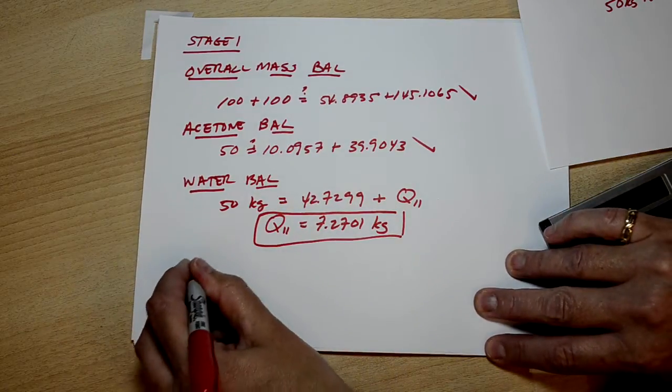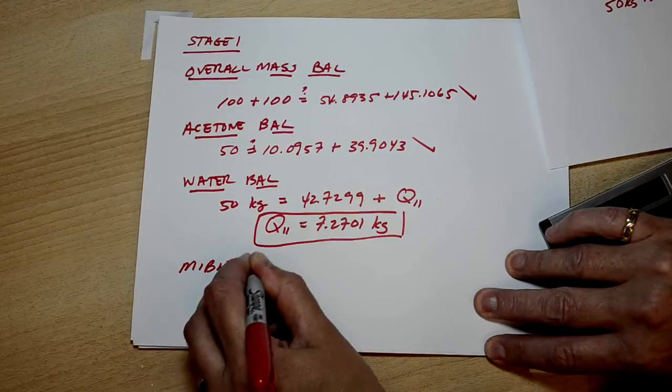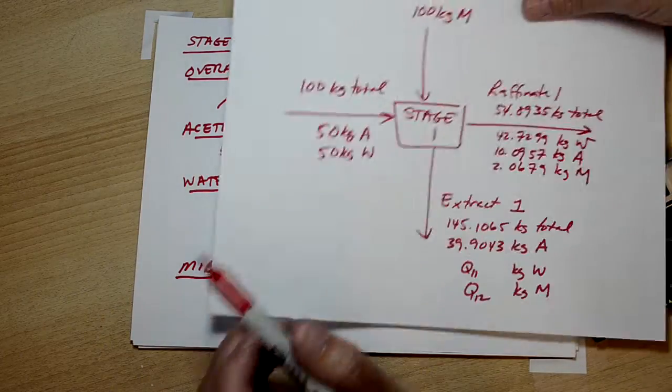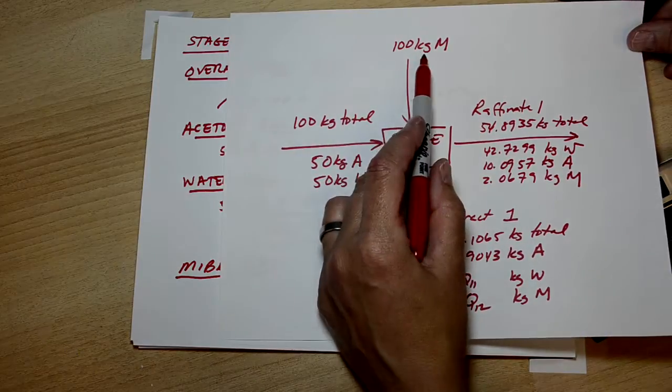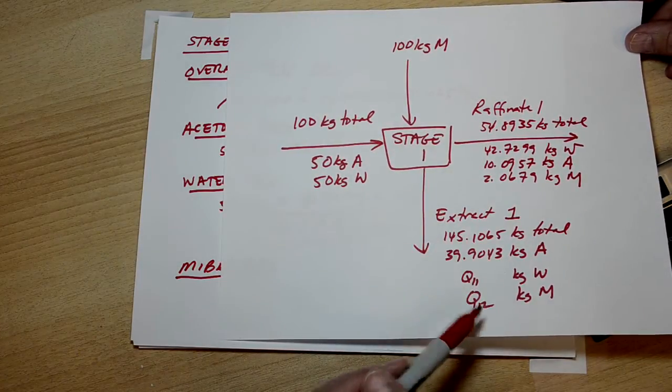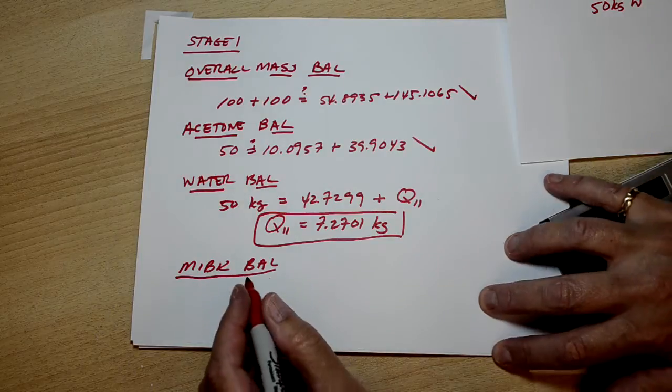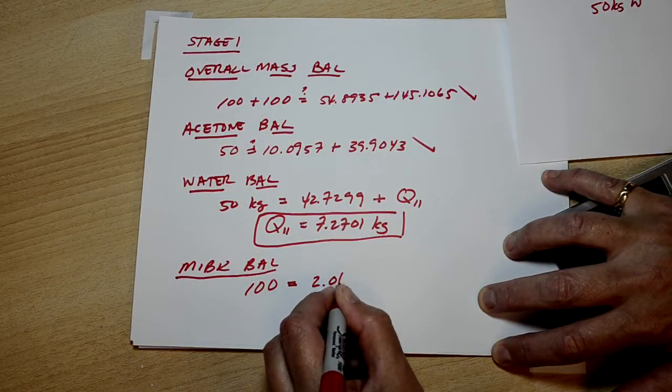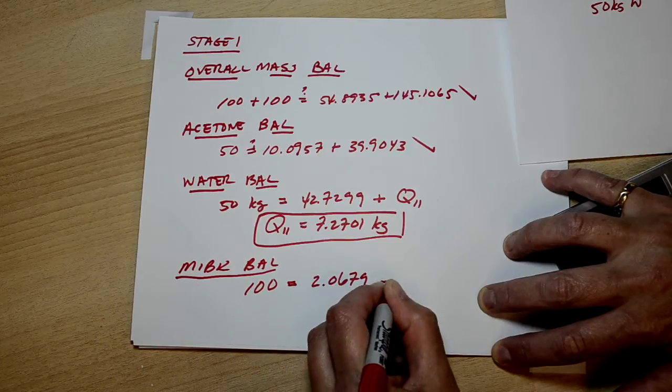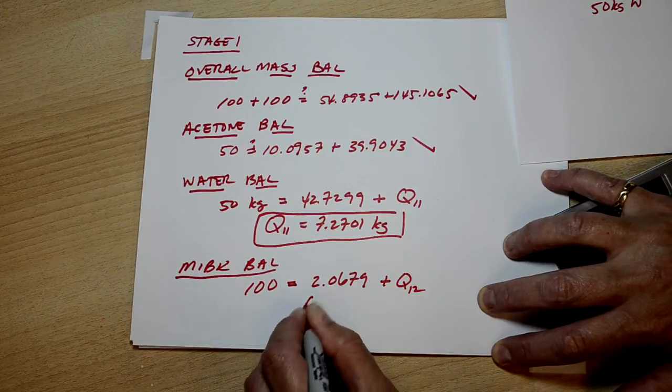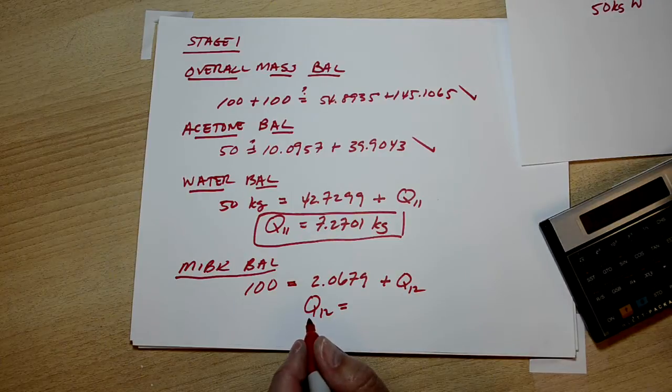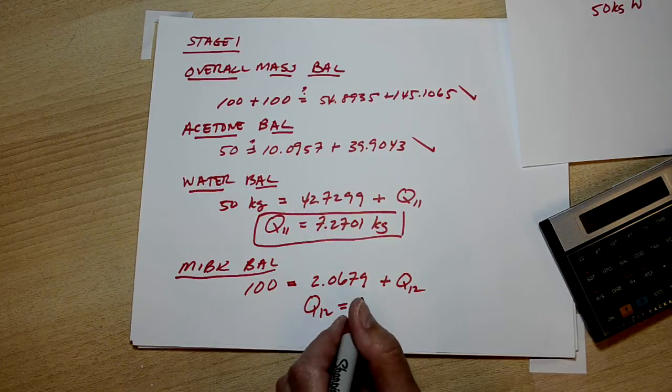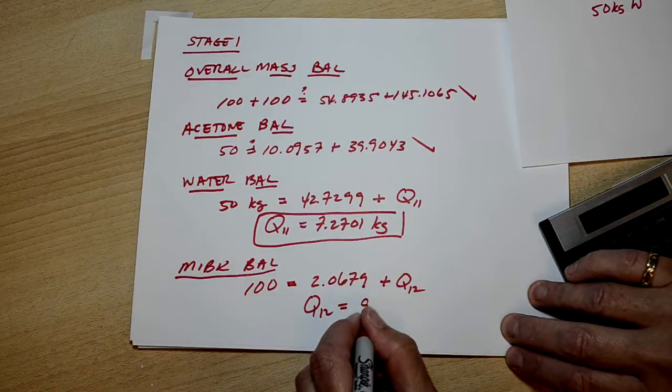And finally, the MIBK balance. None come in, 100 come in, 2 and change come out, Q12 comes out. 100 equals 2.0679 plus Q12, so Q12 equals 97.9321.